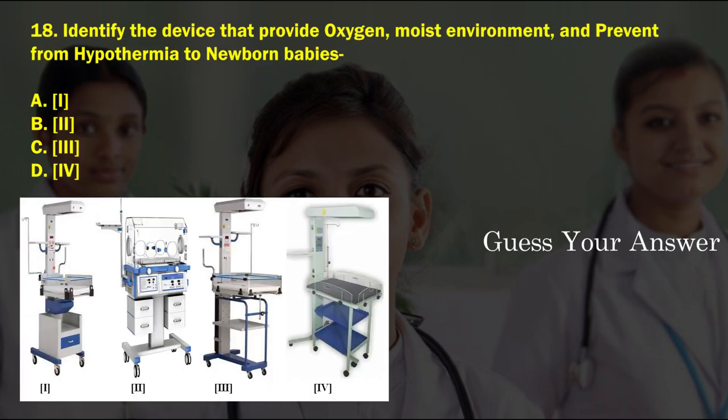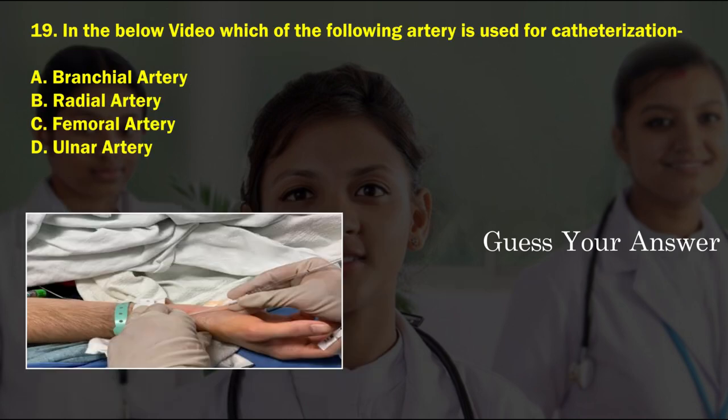Identify the device that provides oxygen, a moist environment, and prevents hypothermia in newborn babies. The correct answer is option B.